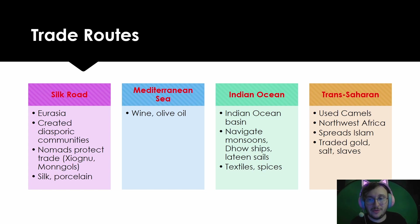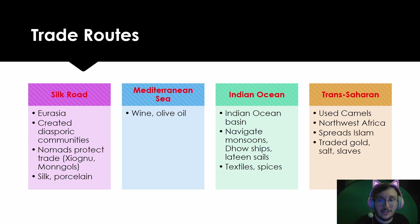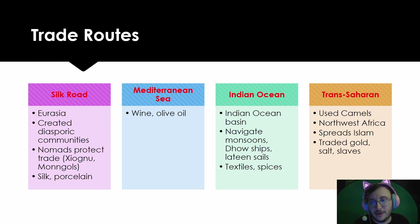The last big trade route is the Trans-Saharan. They used camels, which carry water in their humps and navigate the desert well. The Trans-Saharan trade route is located in Northwest Africa. Islam spread through the Trans-Saharan trade route, just like Buddhism spread along the Silk Road. Major goods traded include salt, gold, and slaves. The Trans-Saharan trade route was dominated mostly by Muslims for most of history, which we'll discuss in Units 1 and 2.